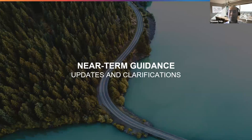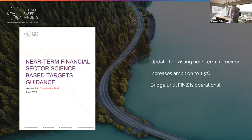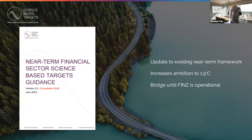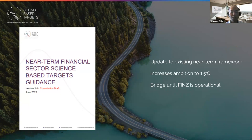The SBTI launched the first version of the near-term financial sector guidance in 2020. Since then, it has been used by over 60 financial institutions to set validated near-term science-based targets. Last month we published a draft version 2 for a 60-day public consultation. In this version, we have five criteria changes, as well as other clarifications and revisions to improve interpretation and application and to aid target setting. The clarifications primarily concern definitions, coverage criteria, use of methods and target options, and an updated target language template.